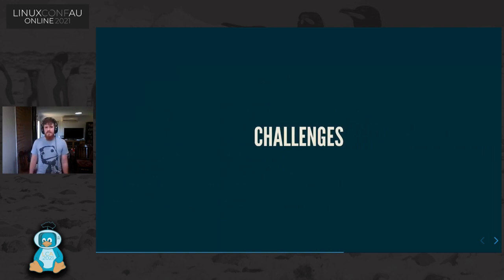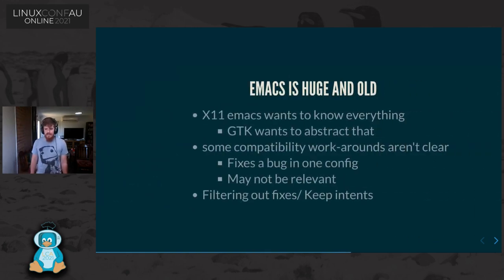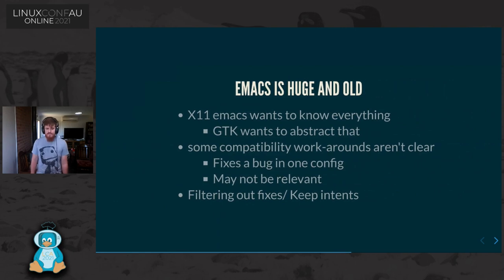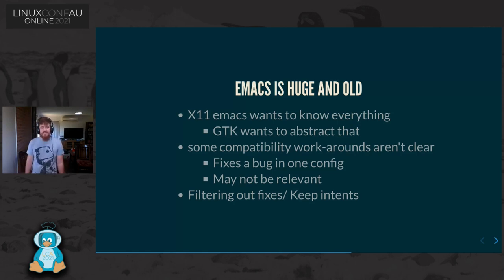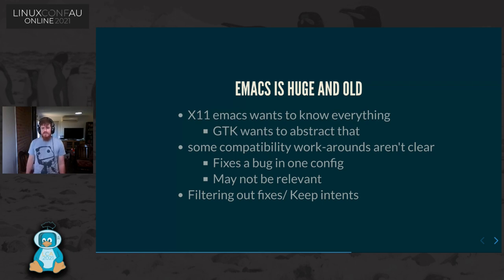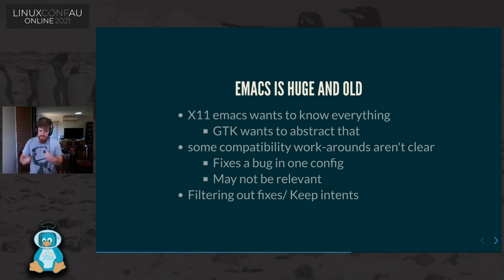A few core challenges with Emacs: it's huge. There are competing priorities. X Emacs wants to know everything — it had to know everything back in the day, it predates basically all your major toolkits. It's had to carry its own toolkit along just to avoid a few bugs. It's 20,000 lines of code with tons of ifdefs — if, else, this, whatever — with so many branches. It's just very, very hard to work with.